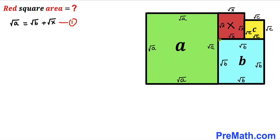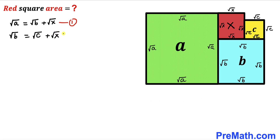Let's make another observation. The whole side length √b equals the sum of two individual lengths: √c and √x. So we write: √b = √c + √x. Moving √x to the other side gives us √c = √b − √x. We label this as equation number two.